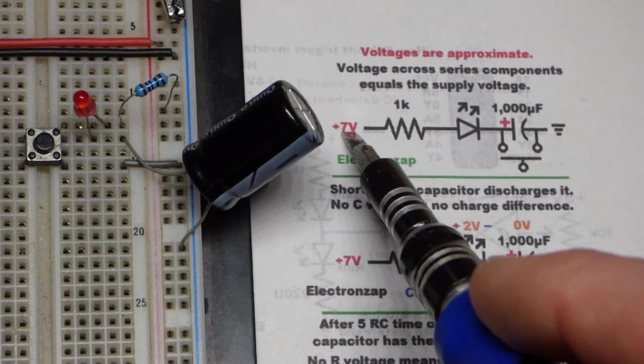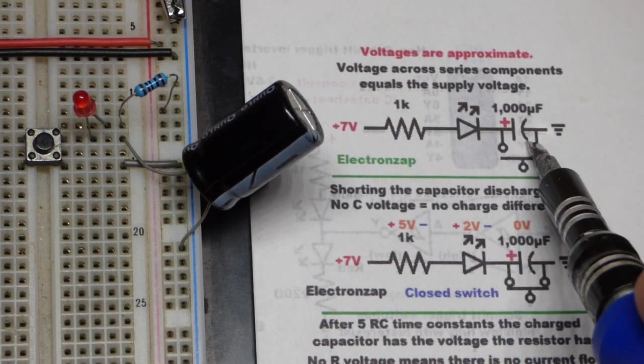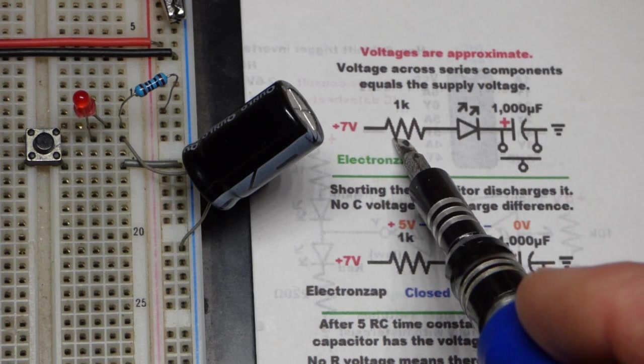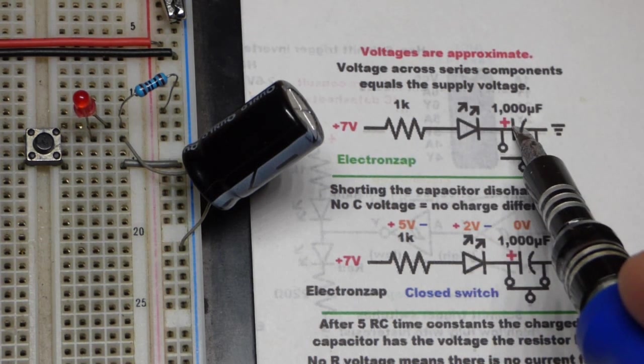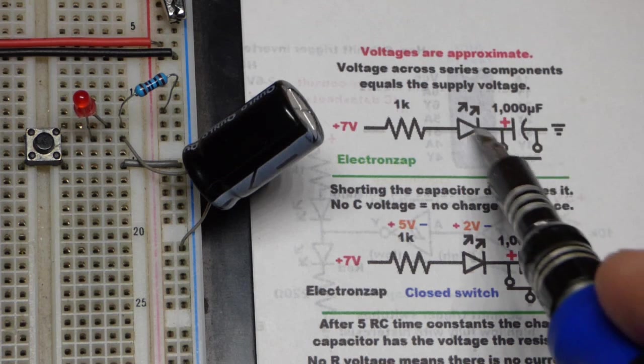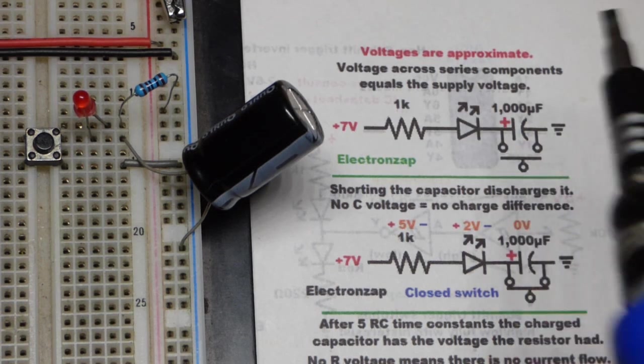So 7 volts will never be across any single component here. We have the 1K resistor limiting current through the LED when the capacitor is not fully charged. So when it's charging or when the switch is closed.